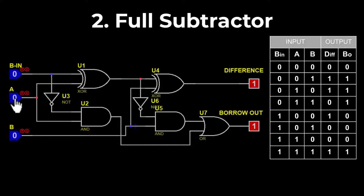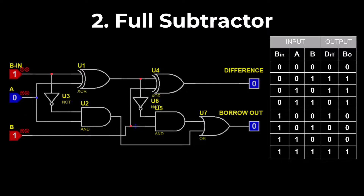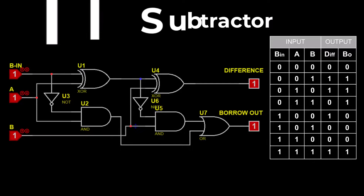When borrow_in = 1, A = 0, B = 0: the difference will be 1 and the borrow out will be 0. When borrow_in = 1, A = 0, B = 1: the difference will be 0 and the borrow out will be 0. When borrow_in = 1, A = 1, B = 0: the difference will be 0 and the borrow out will be 0. When borrow_in = 1, A = 1, B = 1: the difference will be 1 and the borrow out will be 1.